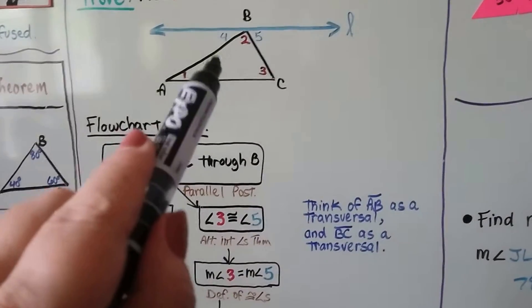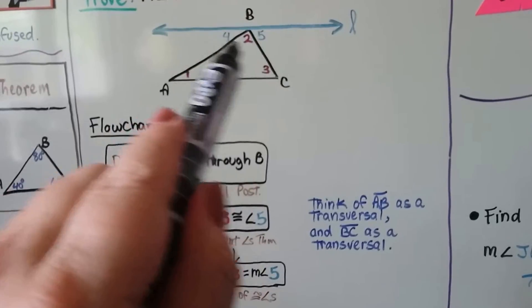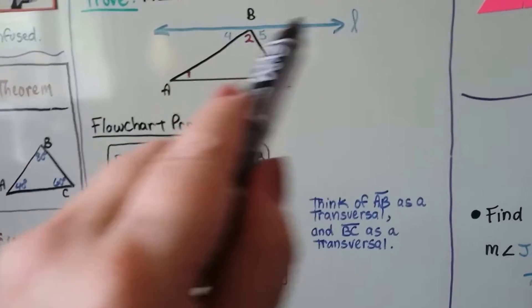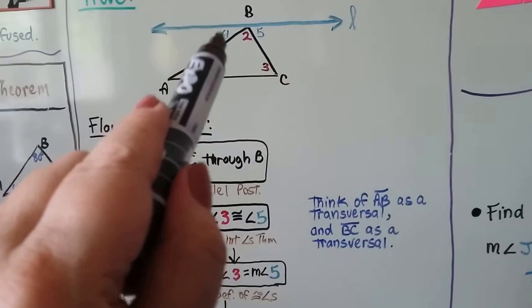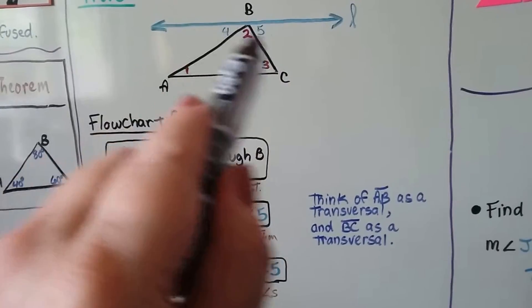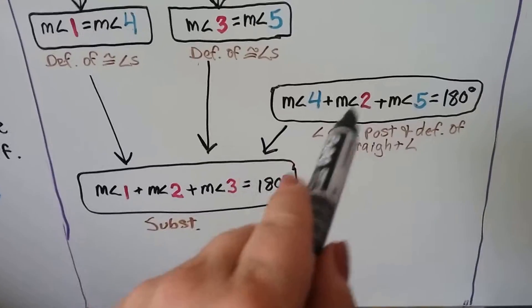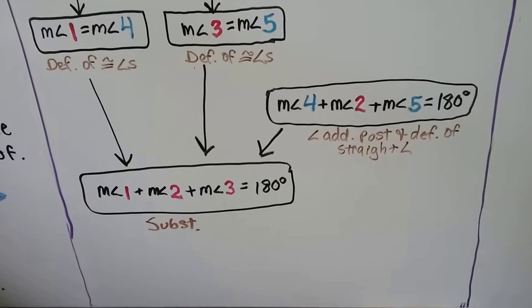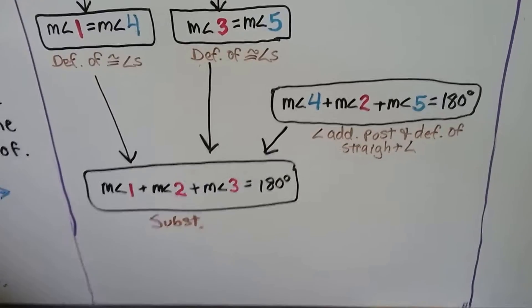Now, angles 2, 4, and 5 are all up here along a straight line. So if we add the measure of angle 2 and angle 4 and angle 5, it should total 180 degrees. The measure of angle 2 plus 4 plus 5 equals 180 degrees — that's the Angle Addition Postulate and the definition of a straight angle.